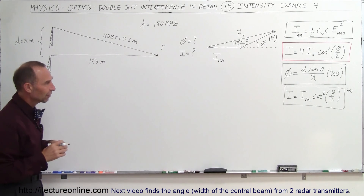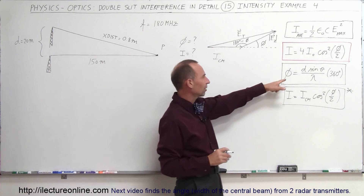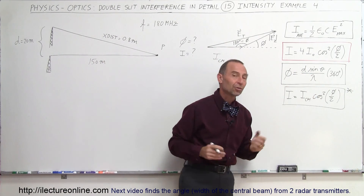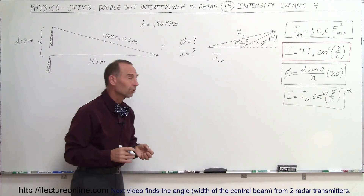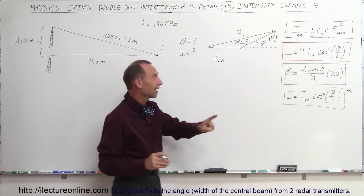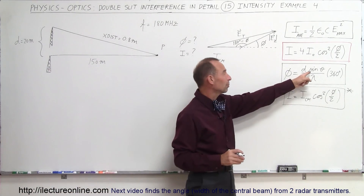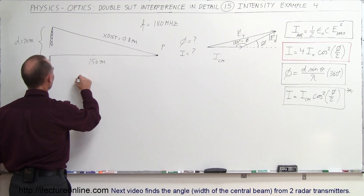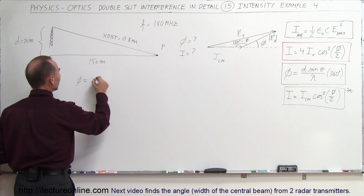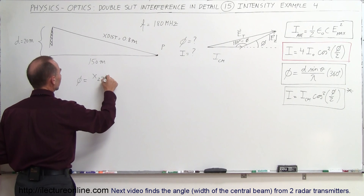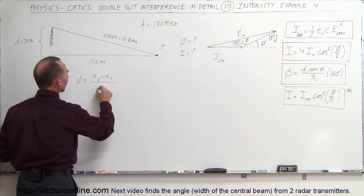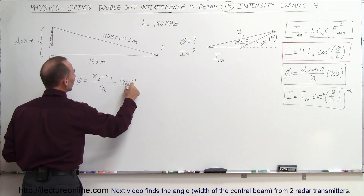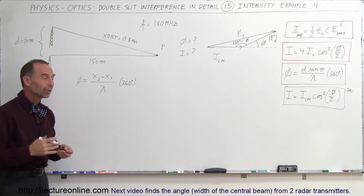The phase difference is fairly straightforward. The equation is: phase difference equals D sine theta divided by lambda, times 360 degrees or 2 pi radians. Instead of writing D sine theta, we can simply write the path length difference. So the phase angle phi equals (x2 minus x1) divided by the wavelength, times 360 degrees. Remember, 360 degrees is a complete phase.